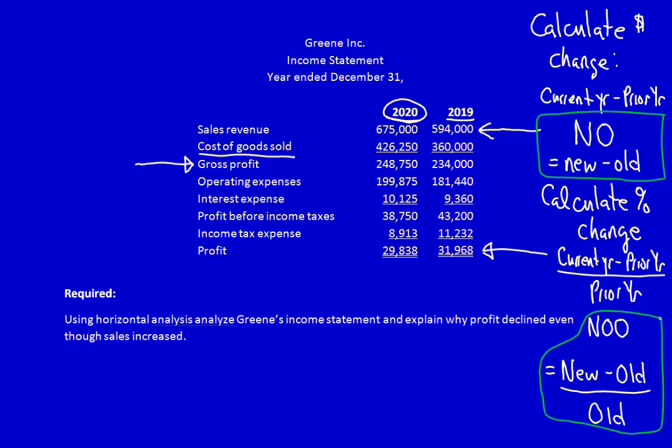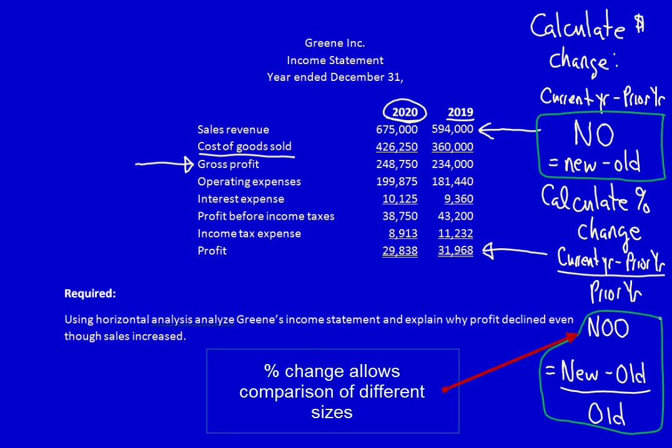We calculate both the dollar amount and the percentage amount because both are informative for analyzing financial statements. However, the percentage amount removes the size factor from the comparison and allows us to recognize magnitude. For instance, a dollar amount may appear large, but when converted to a percentage, the actual change may be small because the base numbers used are so large.